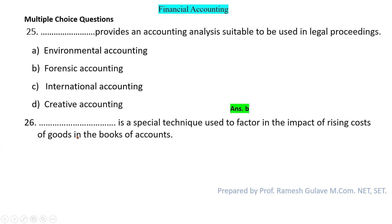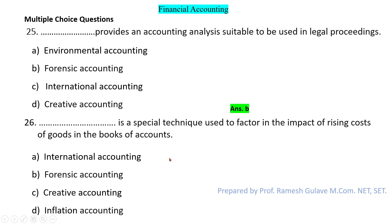The next question says: dash is a special technique used to factor in the impact of rising cost of goods in the books of account. This is basically inflation accounting. Inflation accounting is used as a special technique to factor in the impact of rising prices of goods and products in the books of account. So here option D — inflation accounting — is the right answer.